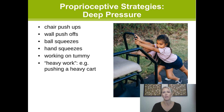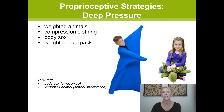Sensory tools that also help with proprioceptive or deep pressure input include a weighted animal, compression clothing, and a body sock — a stretchy outfit — or even just wearing a weighted backpack. These are all great activities for providing deep pressure input, and sharing that information with your school helps explain why these activities are useful and important for your child to stay regulated. These tools are available through online shopping, or you can consult your child's school or occupational therapist for more information.